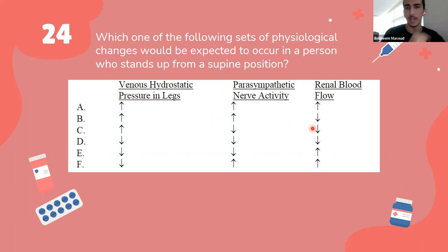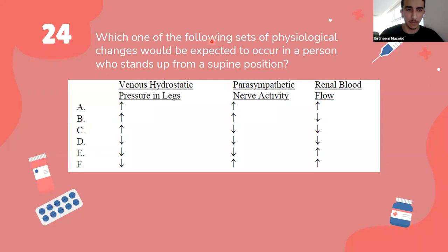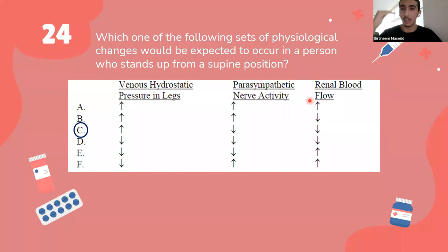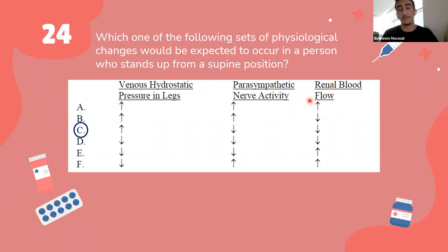When a person stands up quickly, blood pools in the veins in the legs — venous return decreases. Parasympathetic activity will decrease to push blood back and compensate. This is a straightforward question about orthostatic changes, and you guys answered it fast.